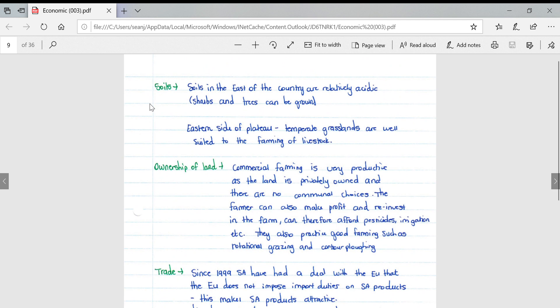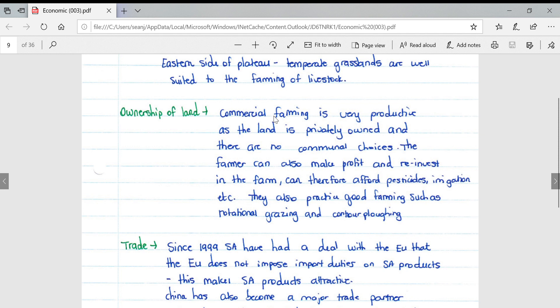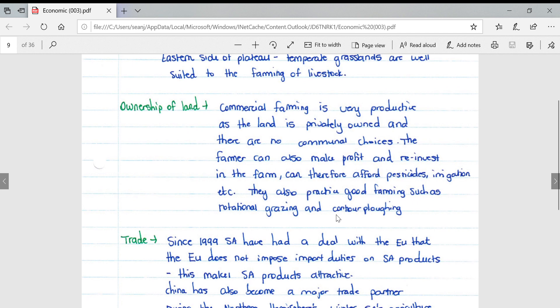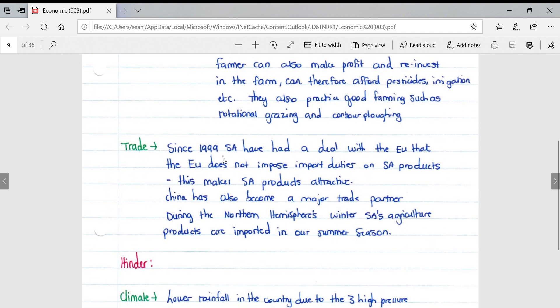Looking at soils, soils in the east of the country are relatively acidic, good for shrubs and trees. The eastern side of the plateau has temperate grasslands well suited to farming livestock. For ownership of land, commercial farming is very productive as the land is privately owned with no communal choices. The farmer can make profit and reinvest in the farm, affording pesticides and irrigation. They also practice good farming such as rotational grazing and contour plowing.